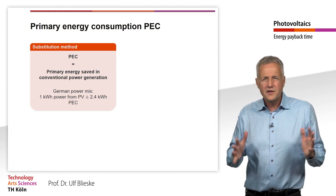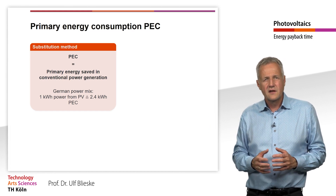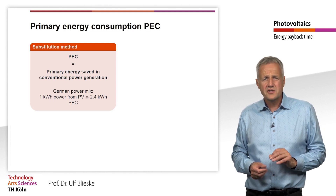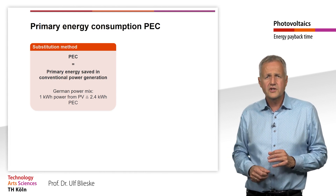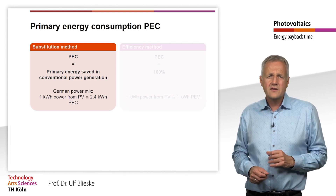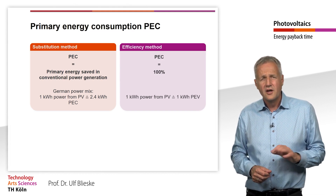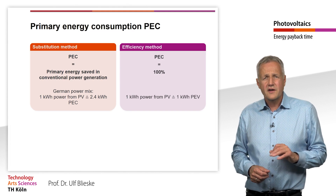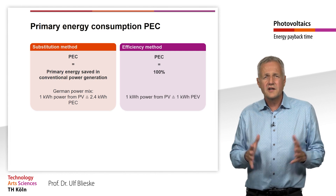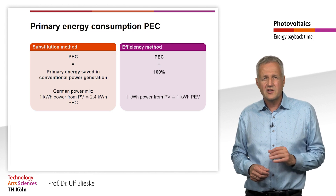As the share of renewables in the energy mix increases, the primary energy factor decreases. The second method of calculating primary energy consumption is the efficiency method, which is also used by the International Energy Agency. In this method, lump sum efficiencies are assigned to non-fossil energy sources. For nuclear power, for example, an efficiency of 33% is assumed. Nuclear power is therefore included in primary energy consumption with three times the energy of the electricity generated by nuclear power plants.